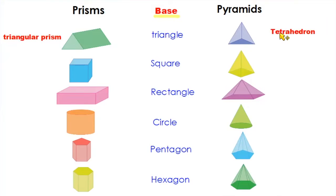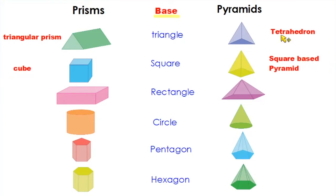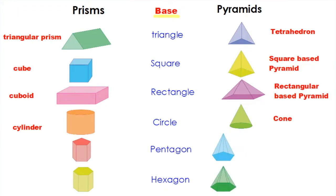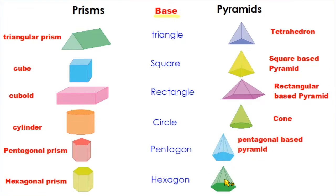A prism with a square base is called a cube, and all faces of the cube are squares. A pyramid with a square base is a square-based pyramid. A rectangular base gives us a cuboid for the prism and a rectangular-based pyramid. A circular base gives us a cone. A pentagonal base gives a pentagonal prism and pentagonal-based pyramid, and a hexagonal base gives a hexagonal prism and hexagonal-based pyramid. The same pattern applies to nonagons, decagons, and all other polygons.